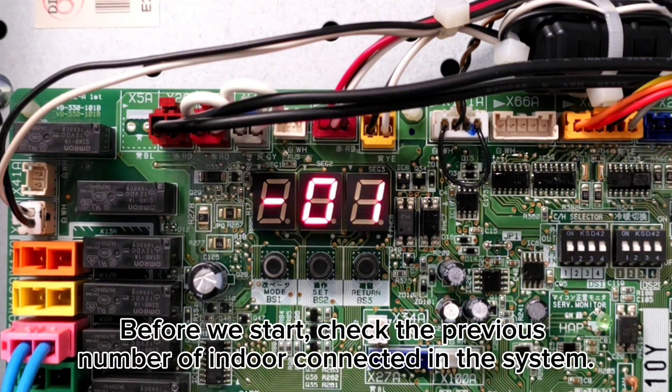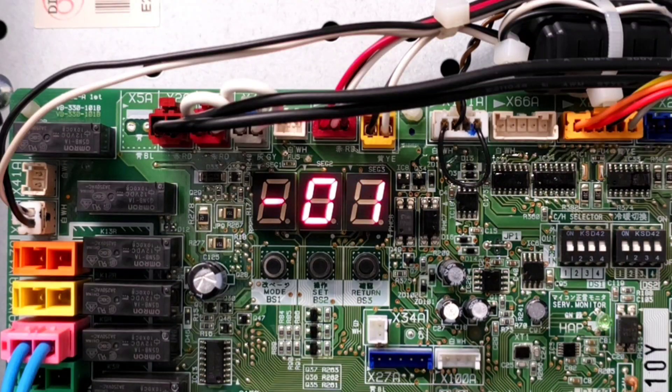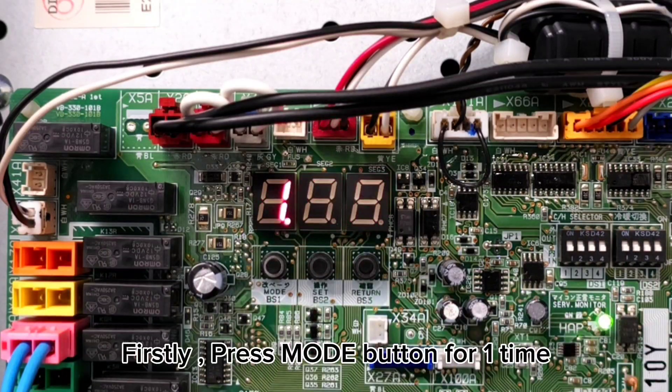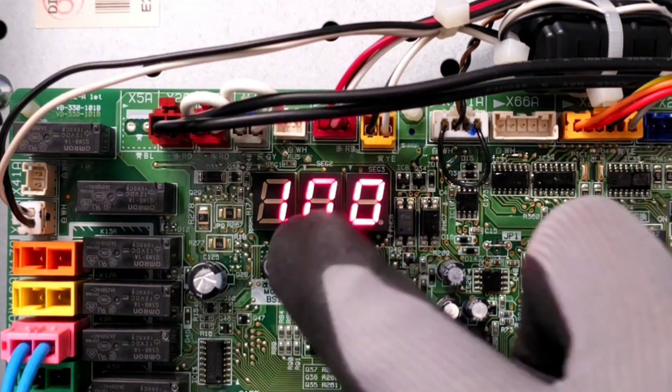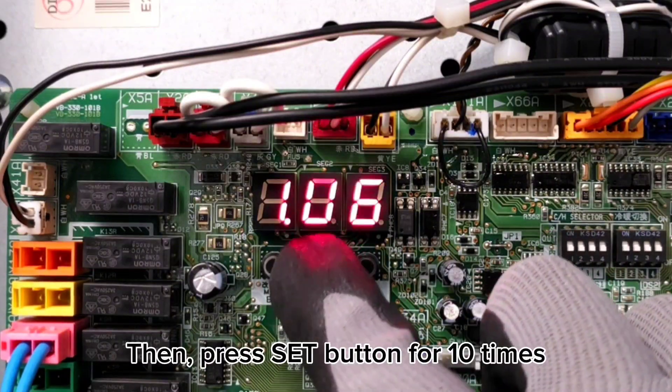Before we start, check the previous number of indoor units connected in the system. First, press Mode button one time. Then, press Set button 10 times.